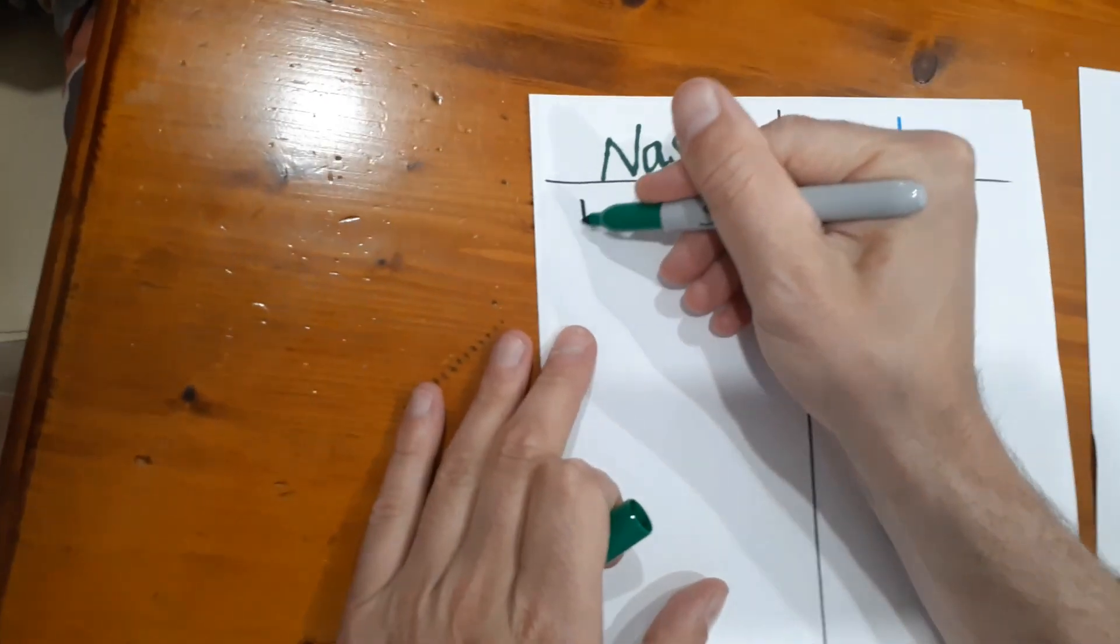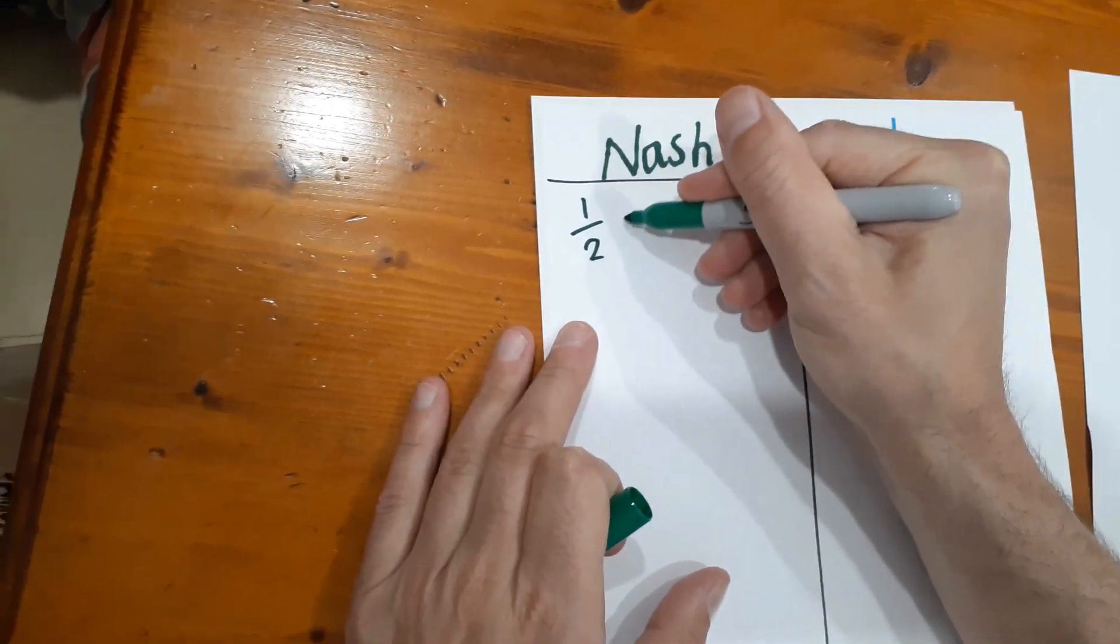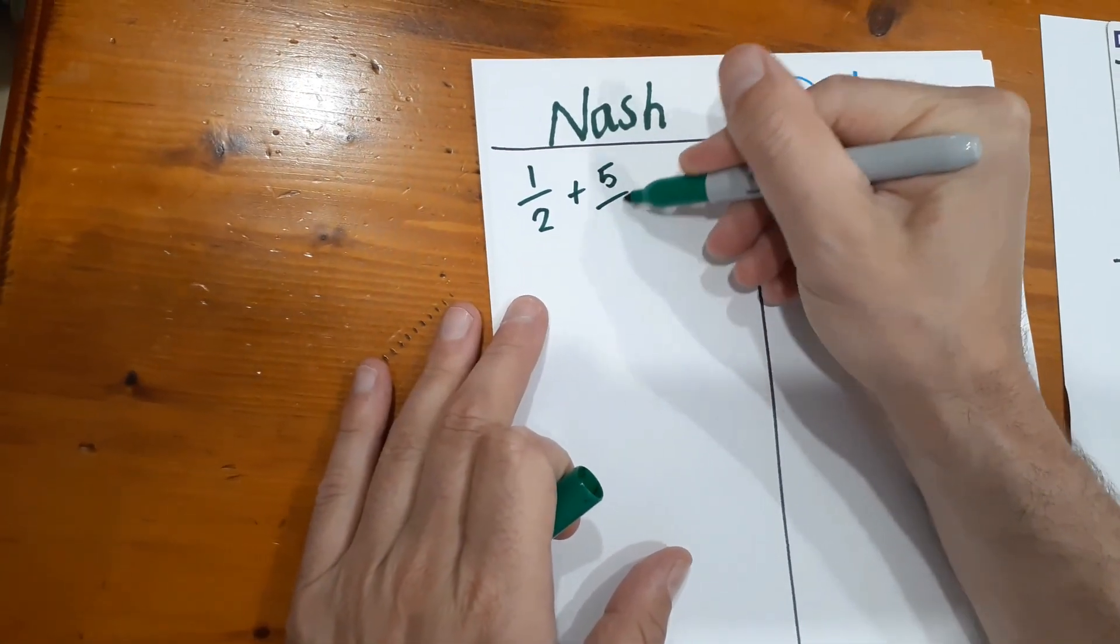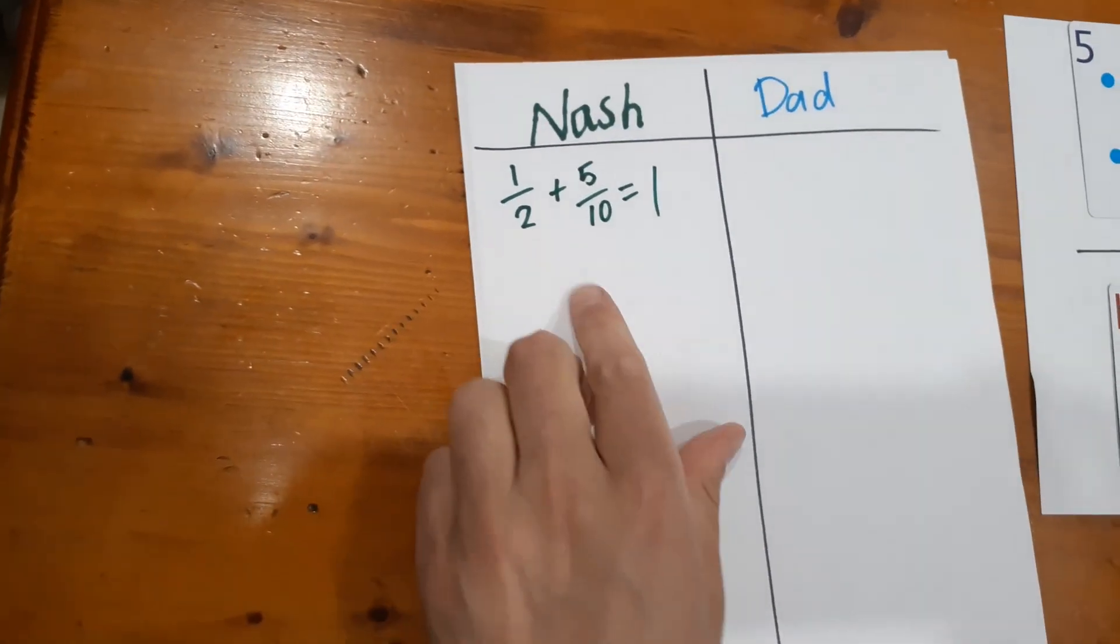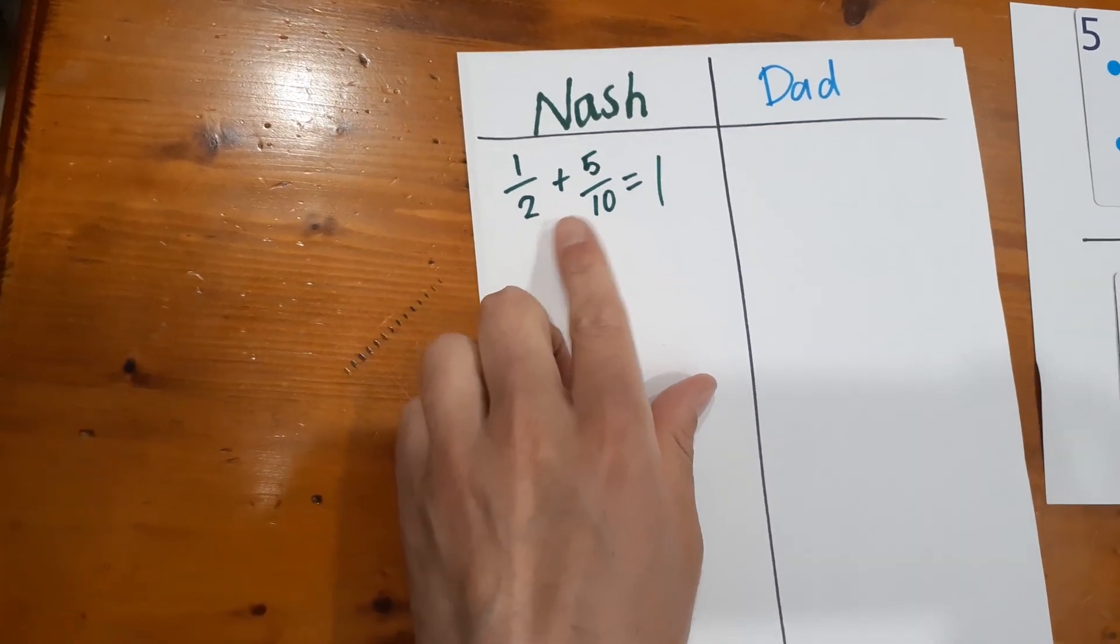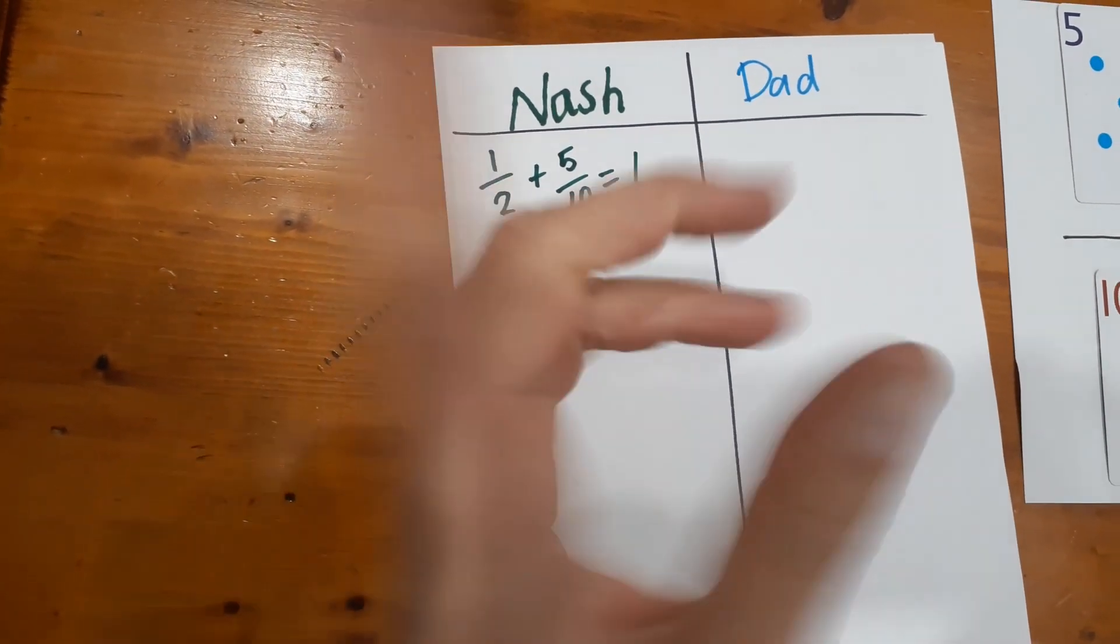Now you happy to let me record, Nashy? Okay, so because Nash won and Nashy got the first point, the way we write the points down is we actually record the equation. Now normally you would have the person who made the equation record it, but just for speed purposes I'll do it. So one half plus five tenths equals a whole. One point to Nash.